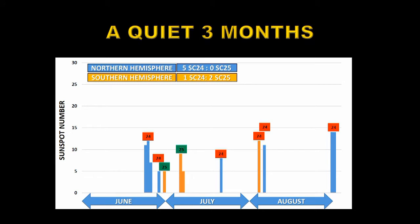I've marked cycle 24 regions with red and cycle 25 regions with green. As you can see, all the groups in the Northern Hemisphere are old cycle, solar cycle 24 regions. In the Southern Hemisphere, two of the three regions are new cycle regions. So I'd argue that the Northern Hemisphere is still in its old cycle, solar cycle 24 decay, whereas the Southern Hemisphere is beginning the transition from the old cycle to the new cycle. However, it's not until both hemispheres have got into this transition phase that we start the new cycle in earnest.